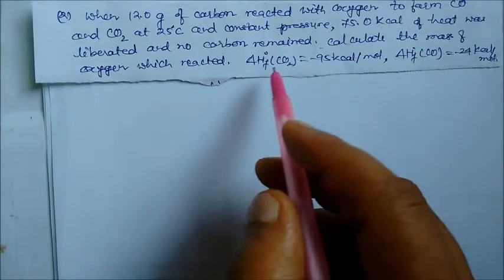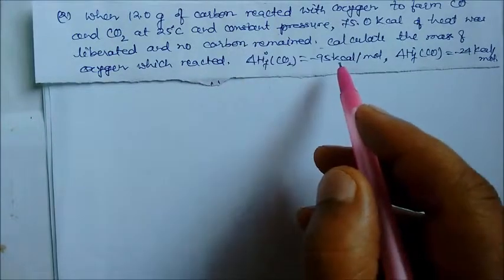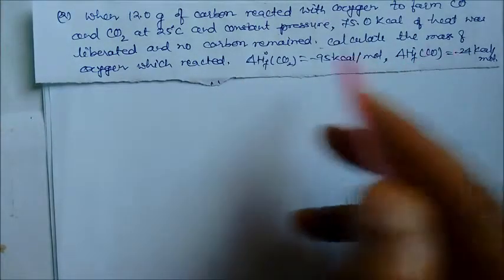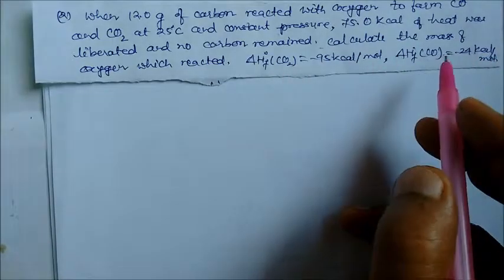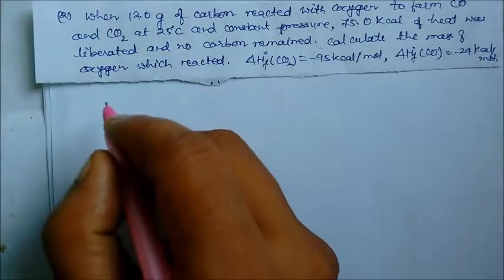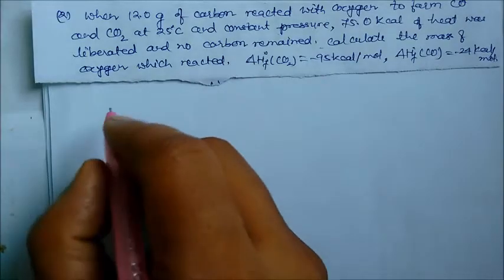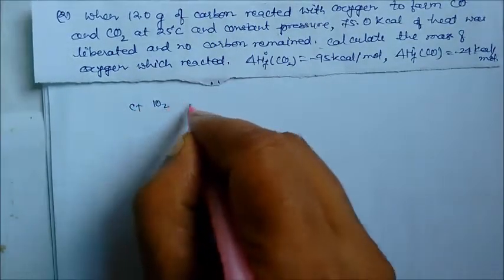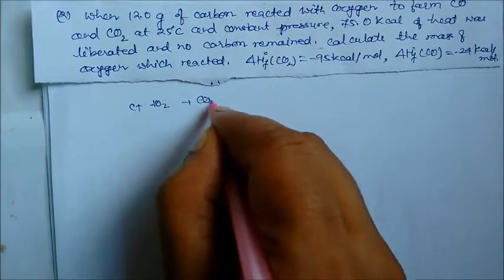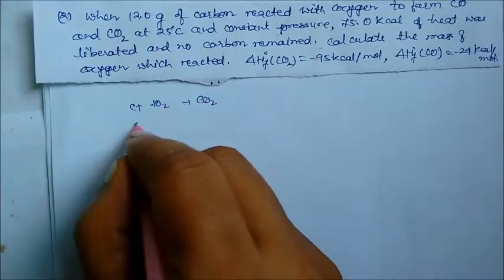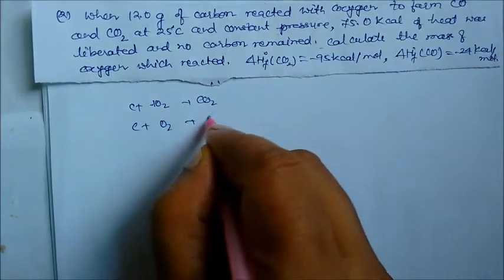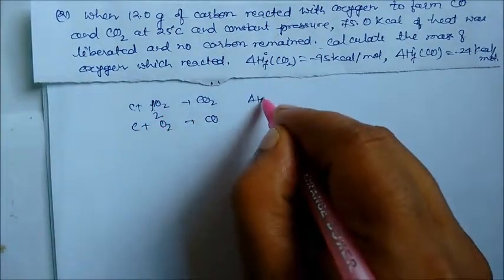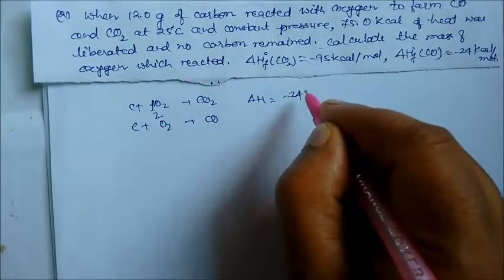The standard heat of formation of carbon dioxide and carbon monoxide are both given. We write the equations: carbon plus oxygen gives carbon dioxide, and carbon plus half oxygen gives carbon monoxide. Delta H for CO₂ formation is minus 95 kilocalorie, and for CO formation is minus 25 kilocalorie.